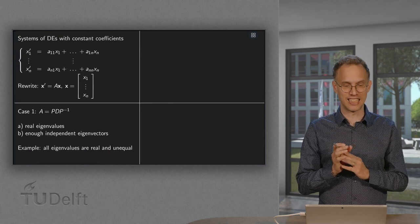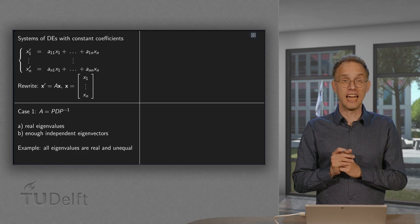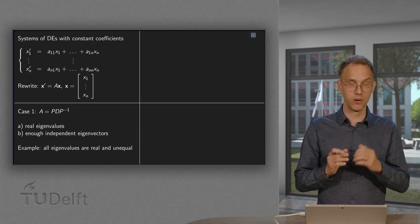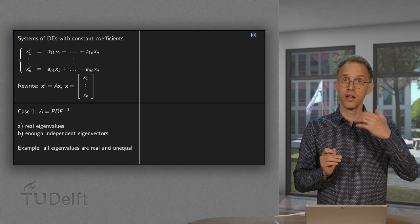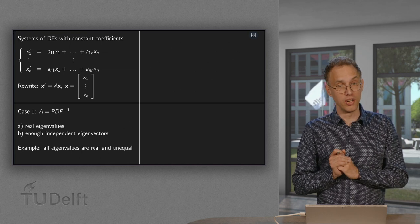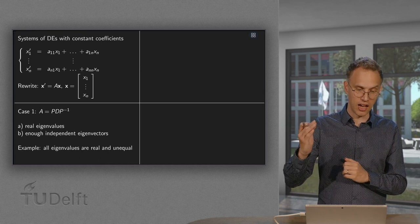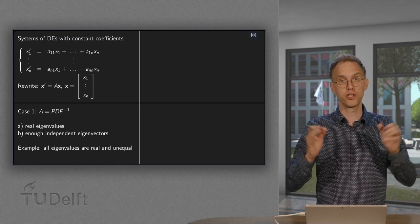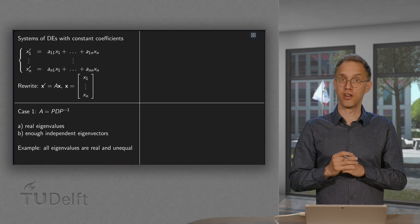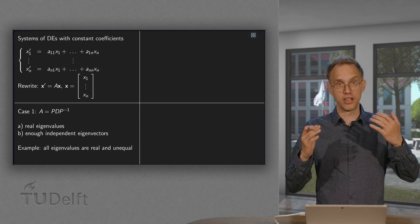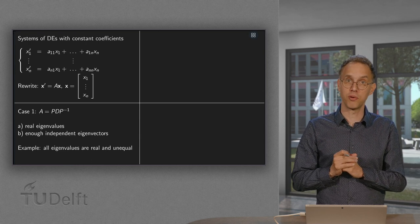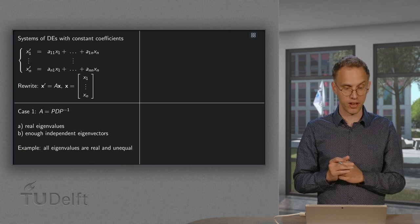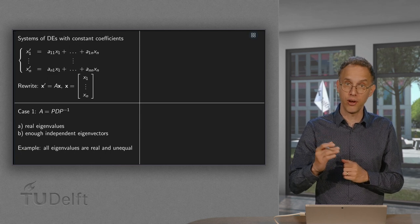First of all, say the easiest case, if we can diagonalize A. So what does this require? We need to have only real eigenvalues and we need to have enough independent eigenvectors. That's the first big case we are going to study. So an example of this, the diagonalizable A, would be when all the eigenvalues are real and unequal.